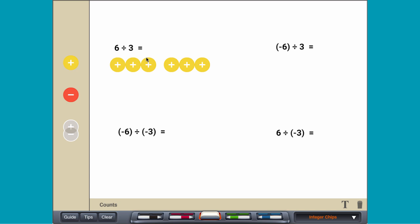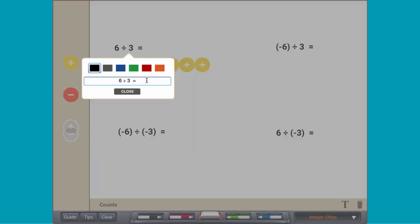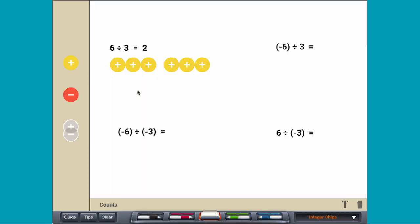There are two groups, so positive 6 divided by positive 3 equals positive 2.